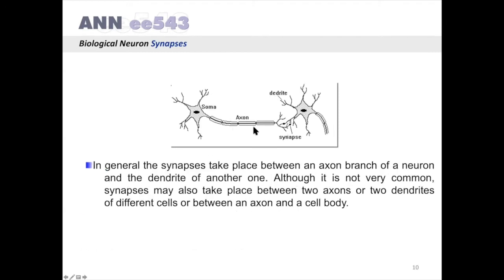In general, the synapses take place between an axon branch of a neuron and the dendrite of another one. Although it is not very common, synapses may also take place between two axons or two dendrites of different cells, or between an axon and a cell body.